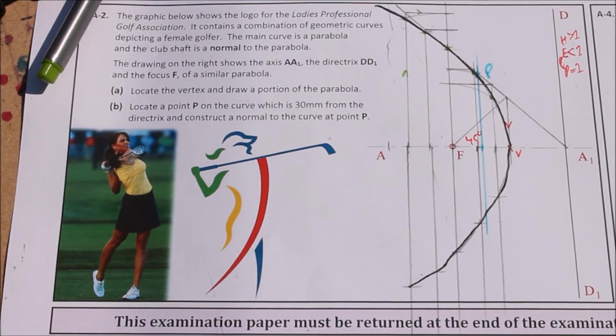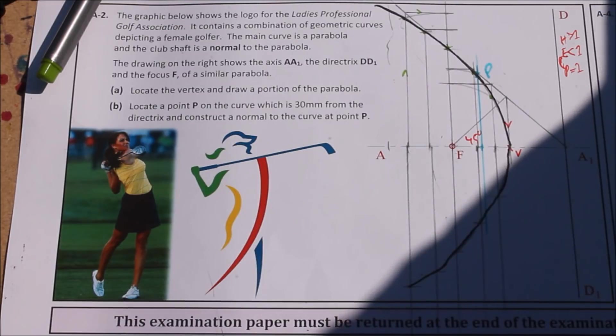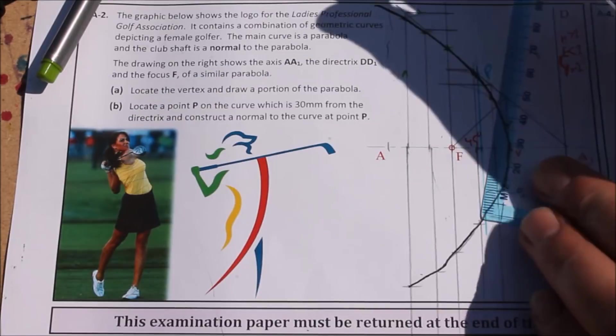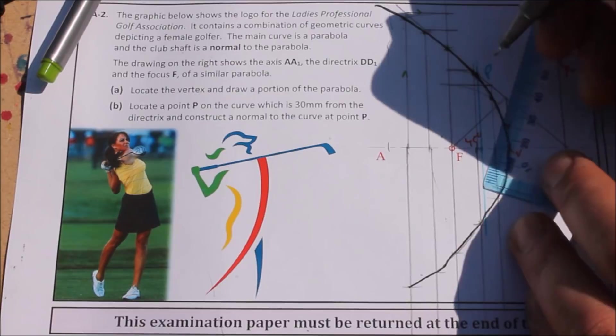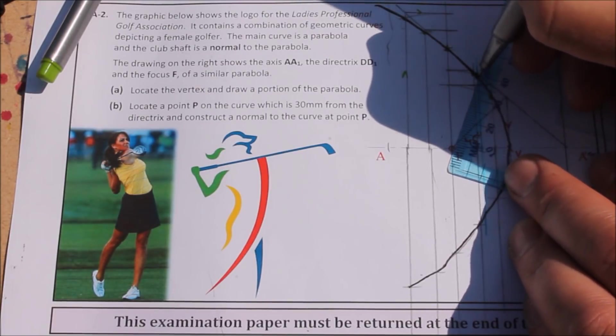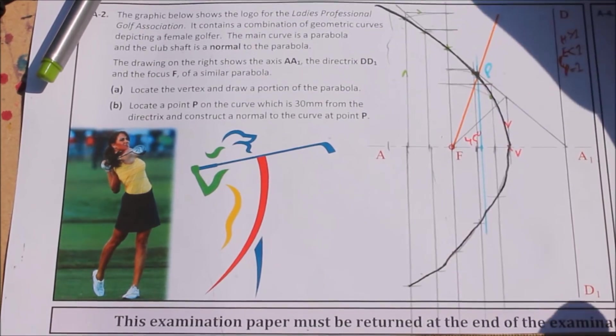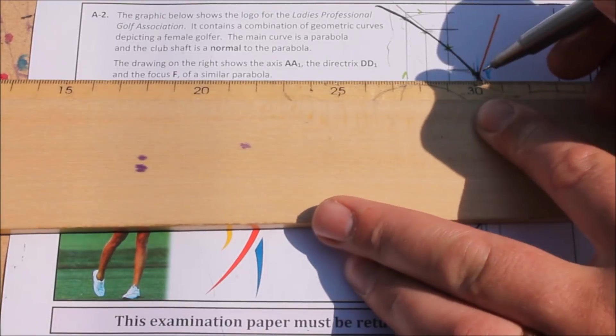So it says construct a normal to the curve at point P. So the first thing you do is you join the focal point to your point after finding it. In this case, it's point P. Maybe the orange might stand out a bit better. So join the focal point to point P. You don't have to stop at point P either, you can continue off. Now, secondly, we need a line from point P that is perpendicular to the directrix.